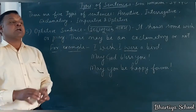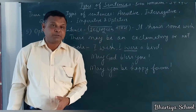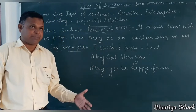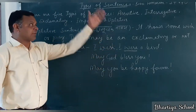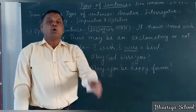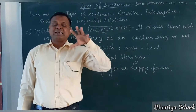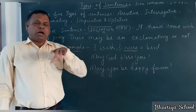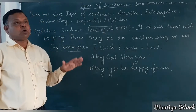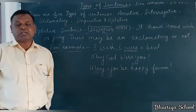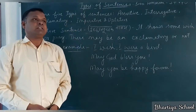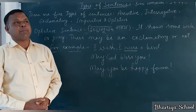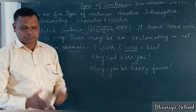So students, this is the last type of sentence — the optative sentence. In this series of five kinds of sentences, I told you the definition of a sentence, the subject and predicate with examples, and all the types of sentences with examples. This is all about types of sentences. We will meet in the next lesson. Till then, be happy! Jai Hind!